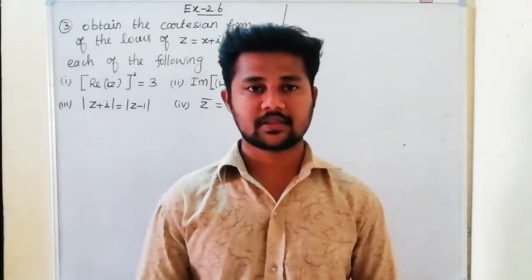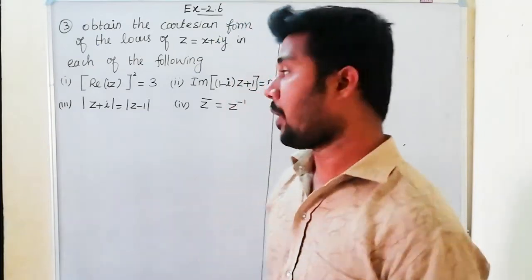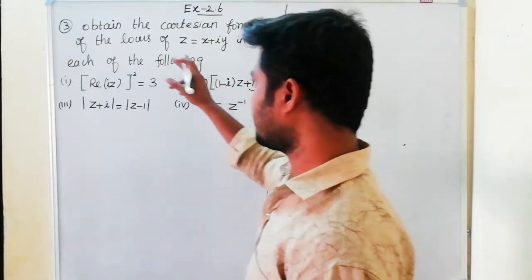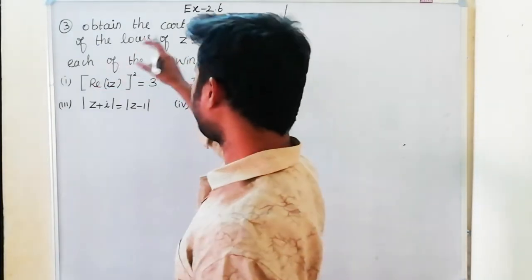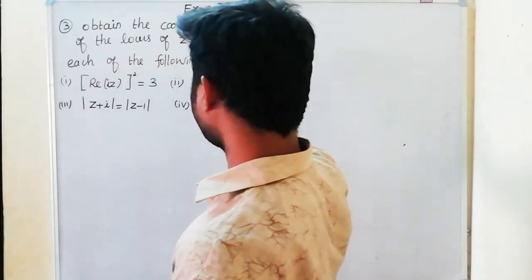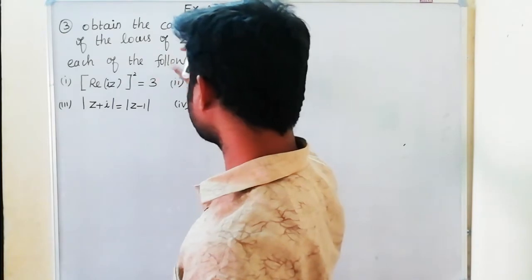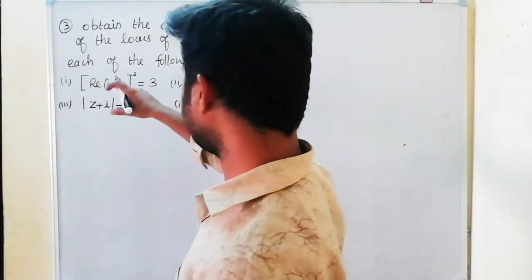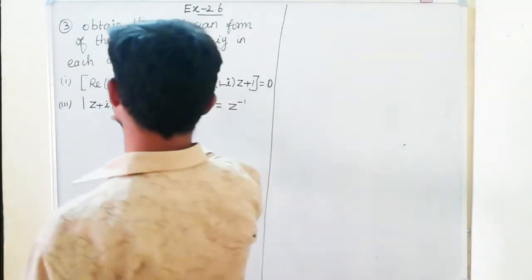Welcome back. Exercise 2.6, third sum: obtain the Cartesian form of the locus of z equal to x plus iy in each of the following.